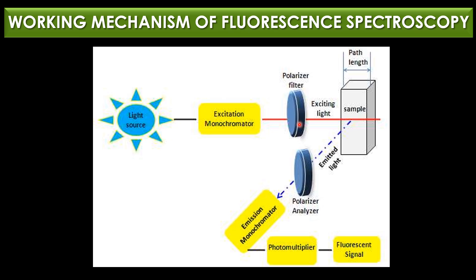A polarized filter is used to polarize the exciting light before it hits the sample. Polarization ensures that the light waves vibrate in a specific direction, which is useful for fluorescence anisotropy experiments where the orientation of molecules is important. The sample — the material being studied — is then excited by this light, causing it to emit light at a different wavelength.